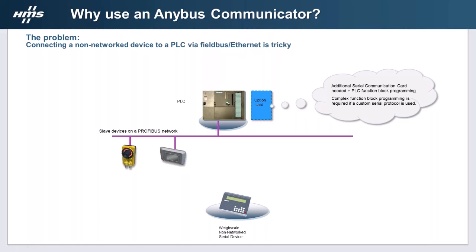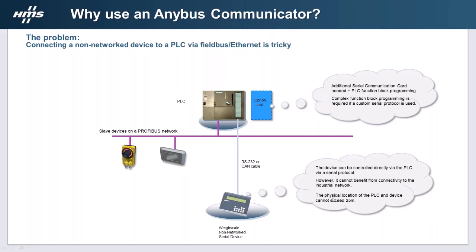You can put an option card on the PLC, and that does work — for some circumstances it works really well. But the problem is it can sometimes be really expensive, and it also requires a lot of programming, which requires some kind of specialist technology. Another option is to directly connect it to the PLC, which is normally a bit quicker. But the problem with that is it's only connected to the PLC itself — it's not actually on the network. The whole principle of networking is that all the machines can talk to each other and share information, so connecting only to the PLC defeats the purpose.